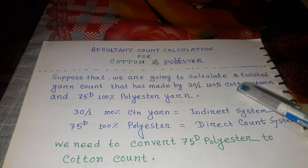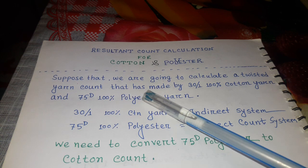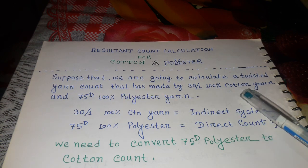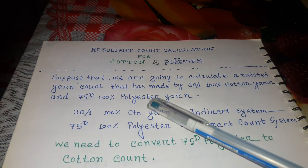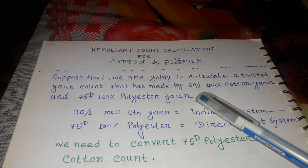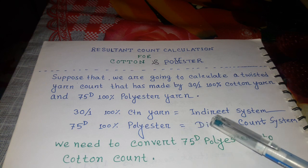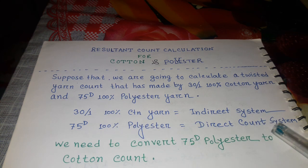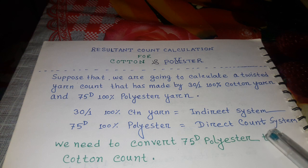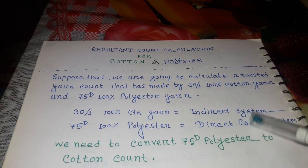Suppose we are going to calculate a twisted yarn count made by 30 single 100% cotton yarn and 75 denier 100% polyester yarn. 30 single cotton yarn is equal to the indirect count system, and 75 denier polyester is equal to the direct count system. So if we want to calculate the resultant count, we need to convert the polyester count.